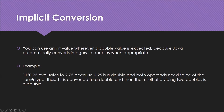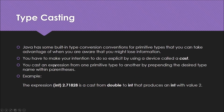In that expression it is actually 11 divided by 4, which is 11 / 4 as doubles. Java has built-in type conversion conventions for primitive types that you can take advantage of, but be aware that you might lose information. Whenever you want to explicitly convert one value into another, you do something called typecasting — you cast one variable type into another.